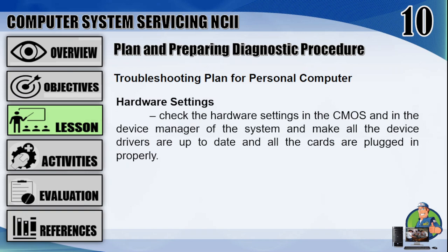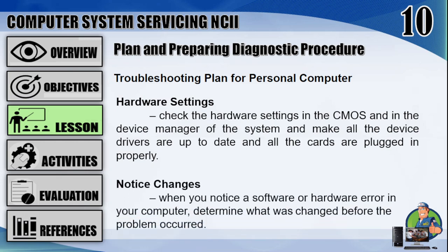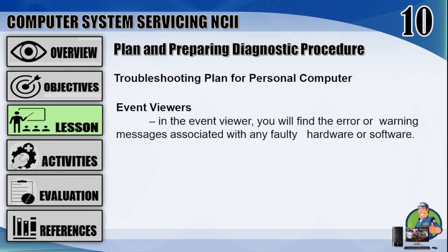Number 3, hardware settings: check the hardware settings in the CMOS and in the device manager of the system, and make sure all the device drivers are up to date and all the cards are plugged in properly. Number 4, notice changes: when you notice a software or hardware error in your computer, determine what was changed before the problem occurred. Number 5, event viewers: in the event viewer, you will find the error or warning messages associated with any faulty hardware or software.